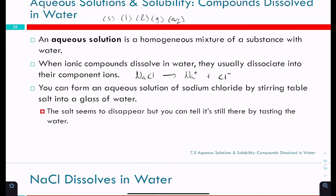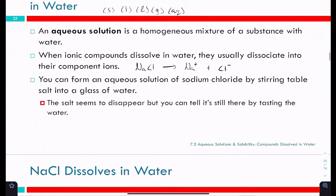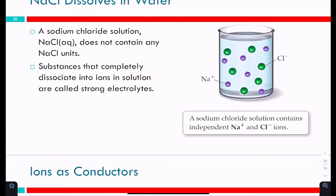By stirring table salt — sodium chloride — in water, it seems to disappear because the liquid becomes clear again. But if you taste the salt water, it's salty. In sodium chloride solution, there are none of the original NaCl units together — they've all been split apart into individual sodium ions and individual chloride ions. Substances that dissociate completely are called strong electrolytes.